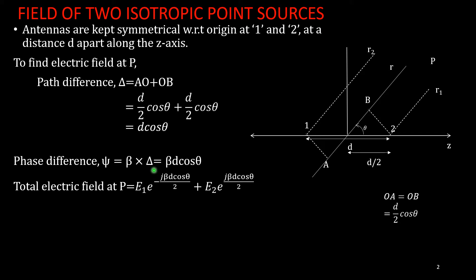The total electric field at point P is the sum of contributions from both antennas: E_total = E1·e^(-jβd·cos(θ)/2) + E2·e^(+jβd·cos(θ)/2). The first antenna's signal lags (hence the minus sign), and the second antenna's signal leads (hence the plus sign). E1 and E2 represent amplitude factors that can be equal or different.